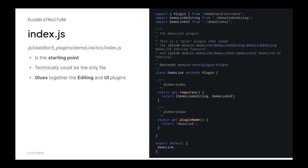The index.js is our entry point, which technically could be the only file in the application. But the convention is to break it into editing and UI parts. We require the editing plugin and we require the UI plugin, and we give it a name: DemoLink.